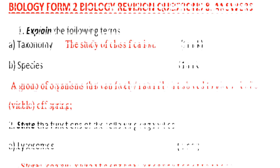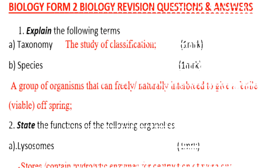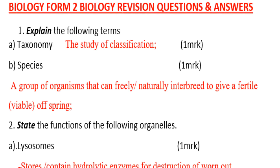Good morning, welcome to our channel. We are doing Biology Form 2 work, division question number one: explain the following terms. Taxonomy is the study of classification. Species is a group of organisms that can freely and naturally interbreed to give a fertile or viable offspring.